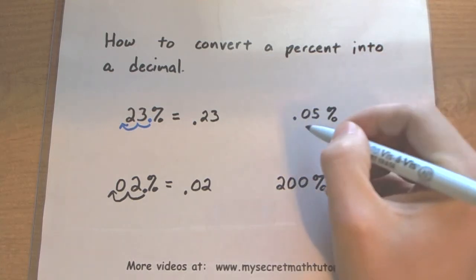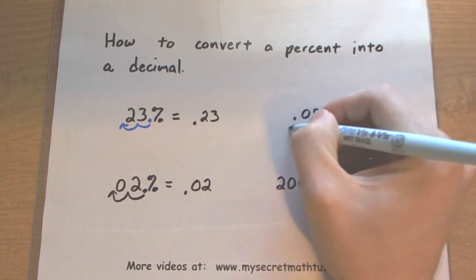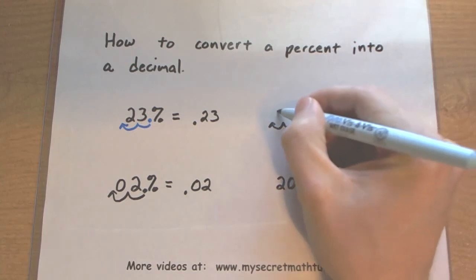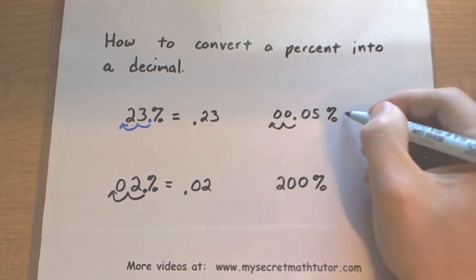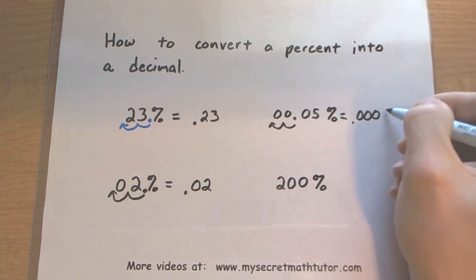All right, let's try another one here. So 0.05%, move it to the left. Looks like we'll definitely need a couple of zeros here. So this will be equal to 0.0005.